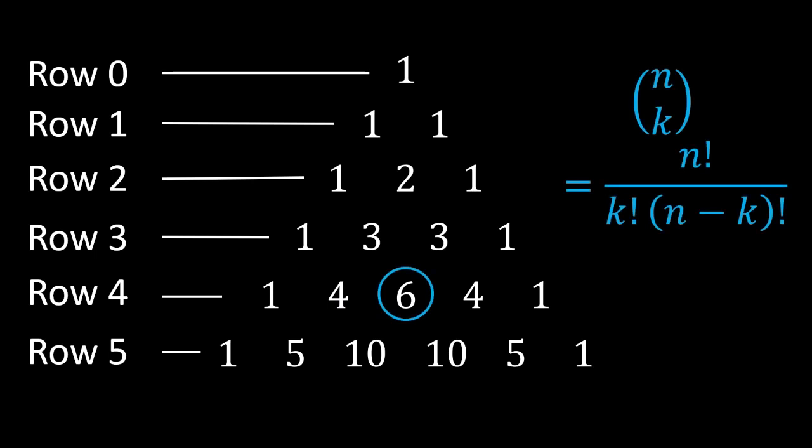You might have learned that in the nth row, the kth term is given by the binomial coefficient n choose k, which is written in factorial form as shown.